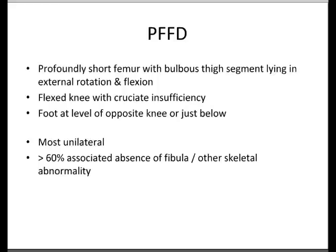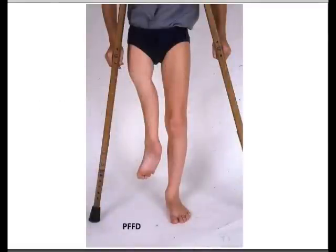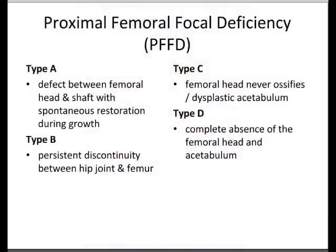Here's an example of a proximal focal femoral deficiency — you can see that the foot is almost at the level of the other knee. There are several types, classified A to D, based on where the defect is: whether it's between the femoral head and the shaft with spontaneous restoration during growth, or there's persistent discontinuity between the hip joint and the femur. In type C, the femoral head may never ossify and you get a dysplastic acetabulum. In type D there is a complete absence of the femoral head.